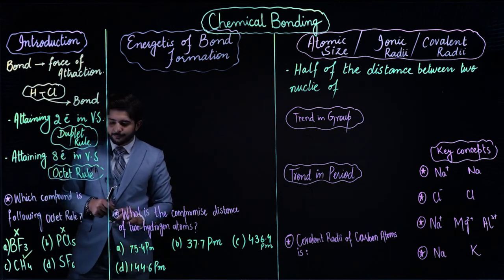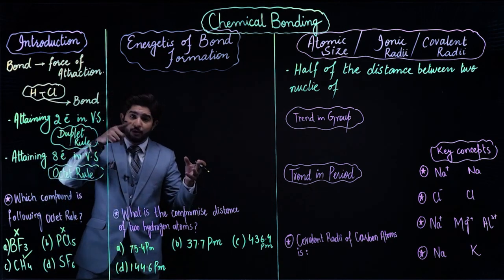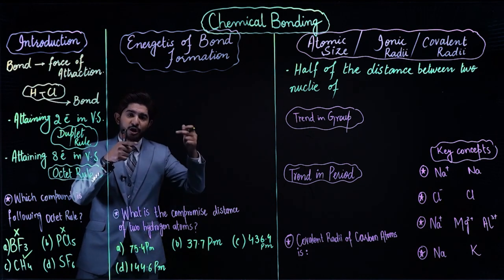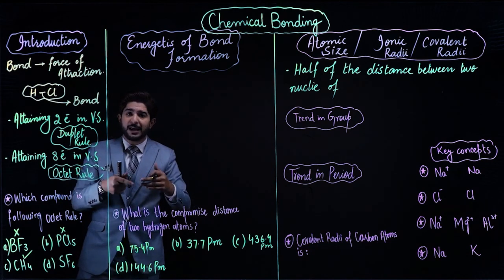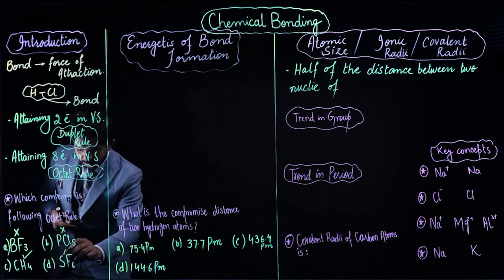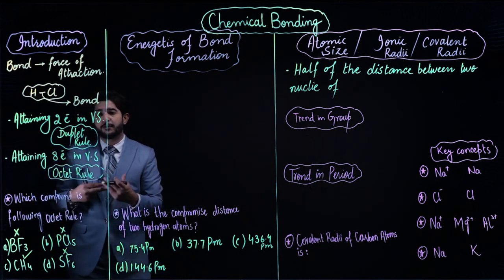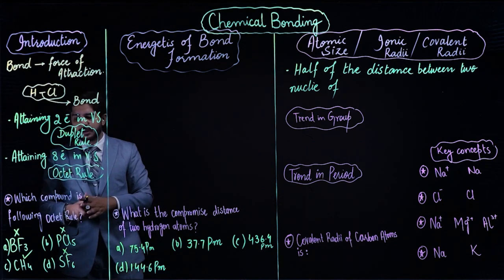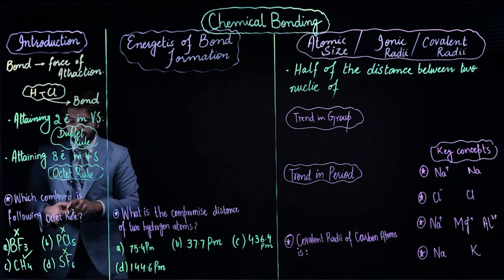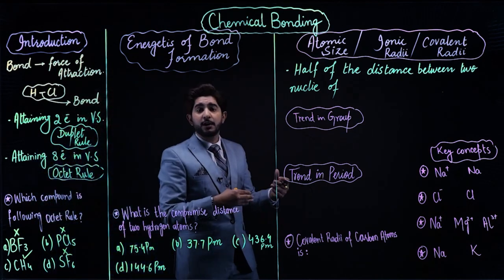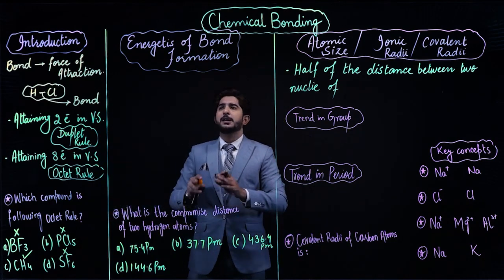Now have a look at the energetics of bond formation. Bond formation happens when atoms combine together. Two key concepts will be shared here: the concept of activation energy and the concept of potential energy of the system. When a bond is to be formed, molecules must first break down into atoms, then atoms collide together — relating to collision theory.